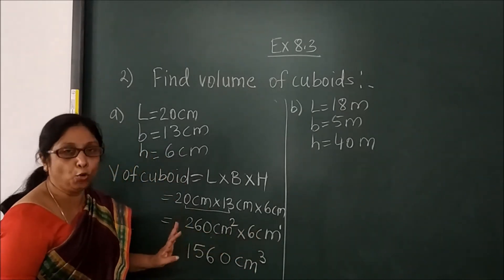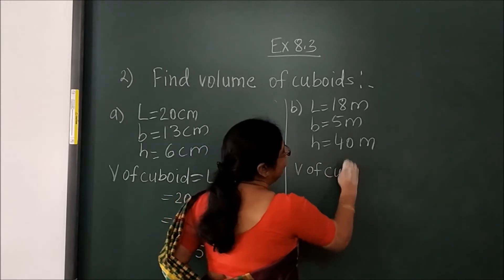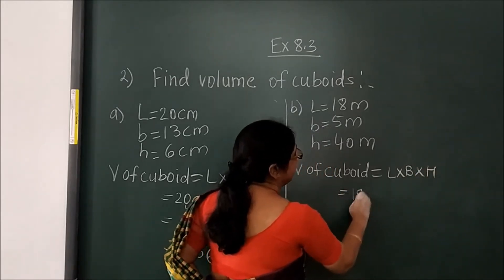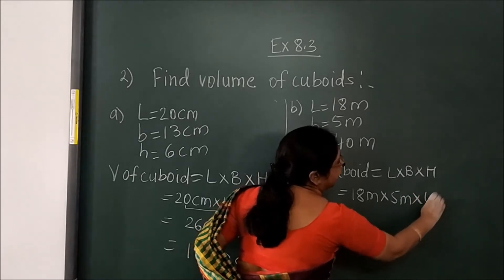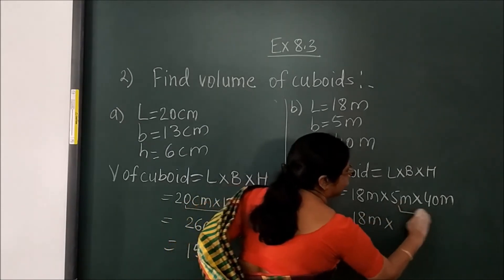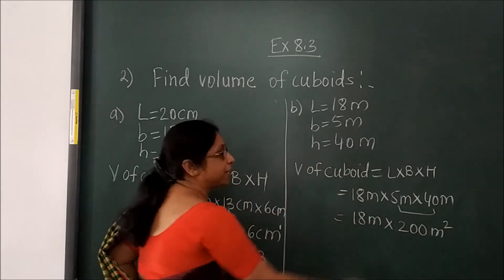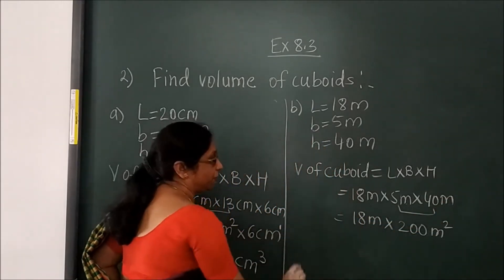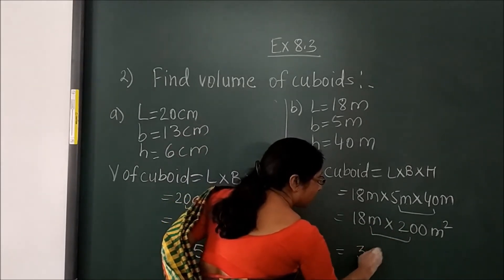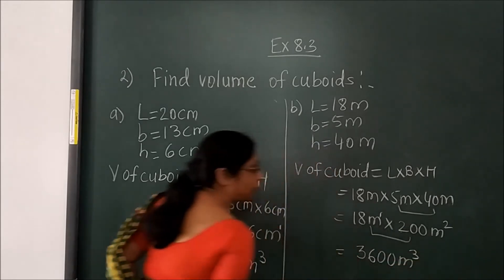Now here we will solve another cuboid volume. Volume of cuboid — length into breadth into height. Place the values: 80 meter into 5 meter into 40 meter. Multiply first: 40 into 5 gives 200 meter squared (two meter units). Then 80 times 200: 80 twos are 160, with two zeros added. Meter power: 2 plus 1 equals 3 — so meter cubed.